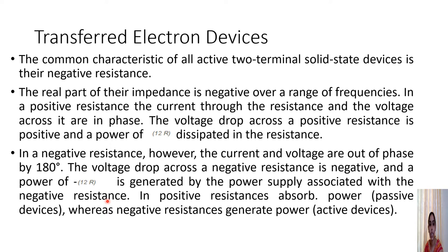A positive resistance absorbs power — these are passive devices. Whereas two-terminal solid-state devices that exhibit negative resistance, such as the tunnel diode and Gunn diode, are active devices which generate power. This is the key principle of negative resistance property used in both tunnel diodes and Gunn diodes.